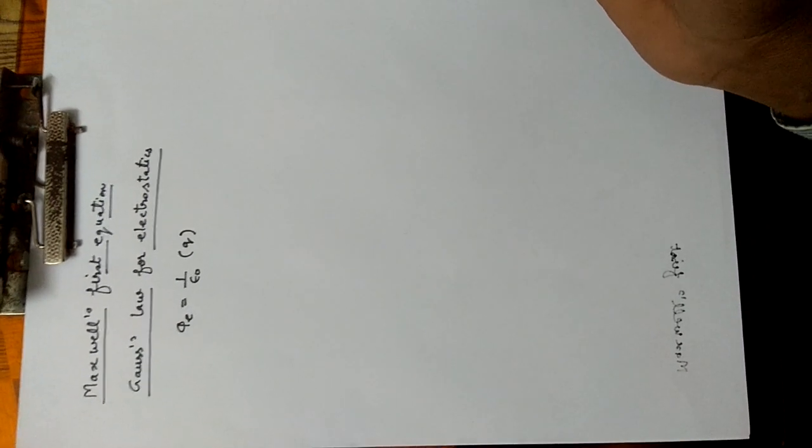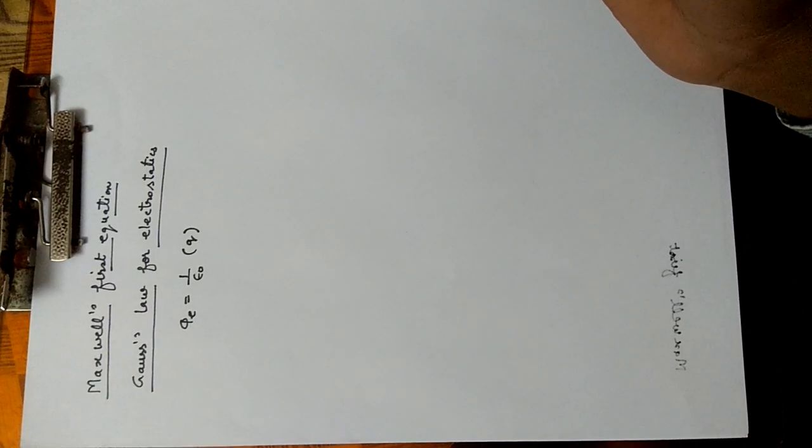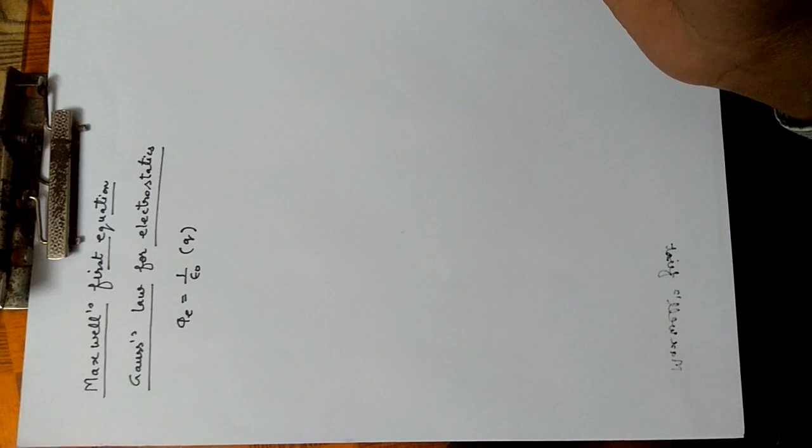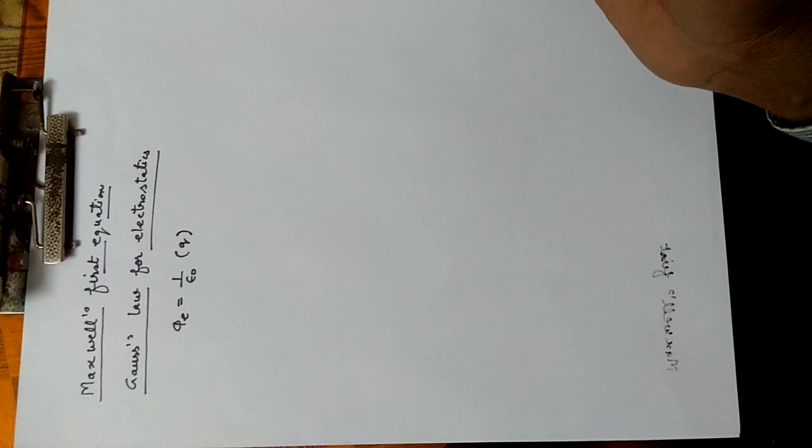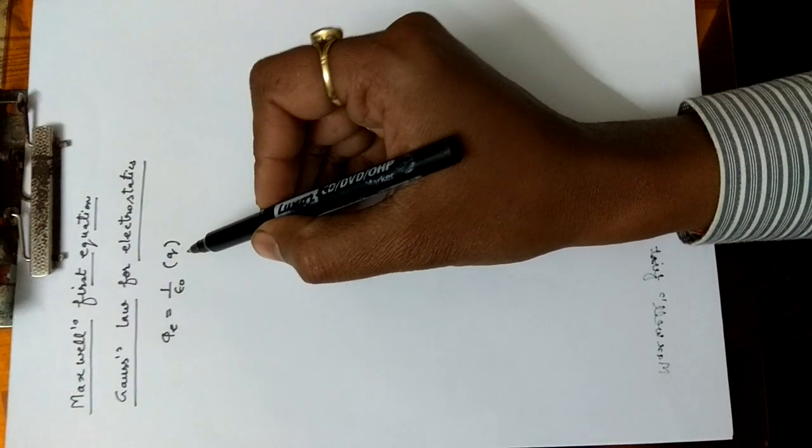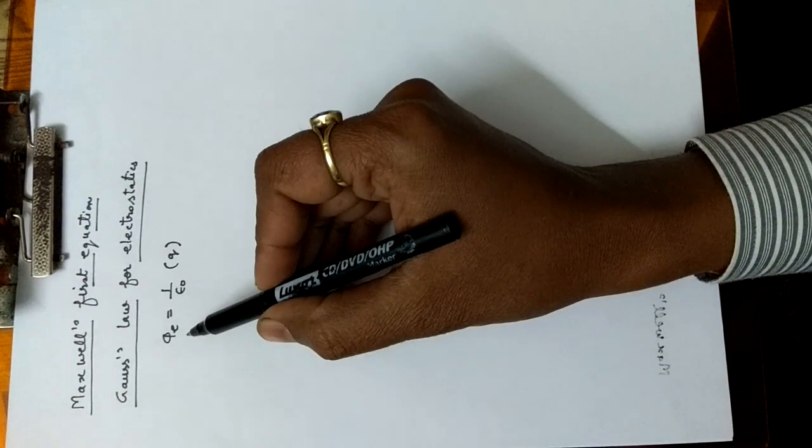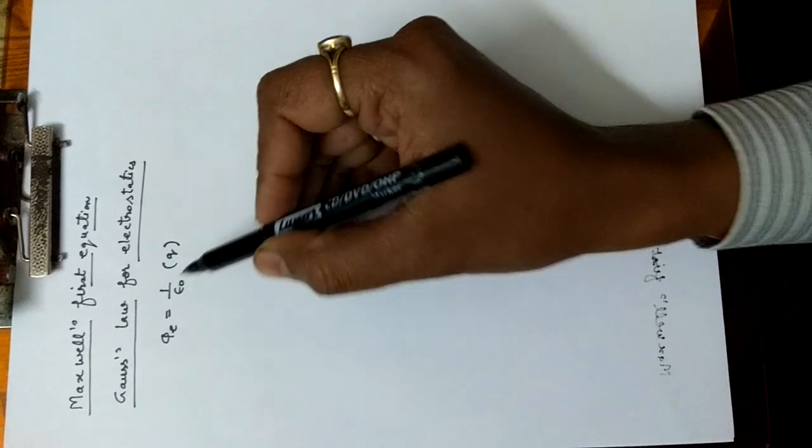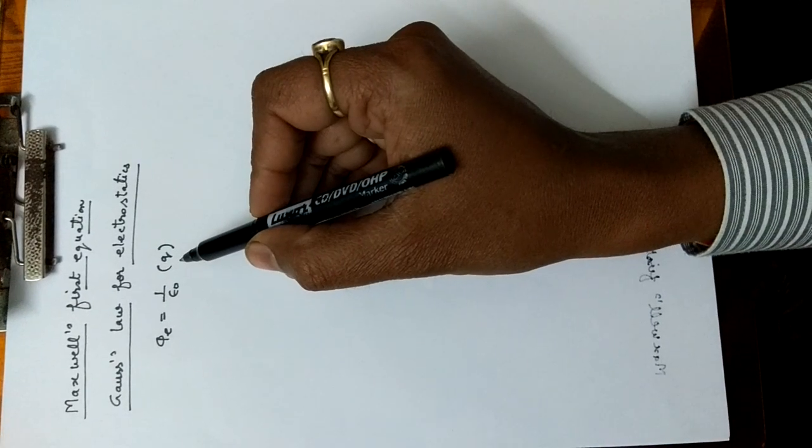Today I will discuss Maxwell's first equation which depends upon Gauss law for electrostatics, which is electric flux is equal to 1 upon epsilon naught times the charge enclosed on the surface. Phi E represents electric flux and Q is the charge enclosed on the surface.